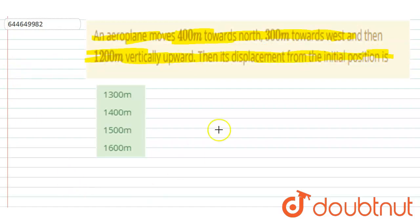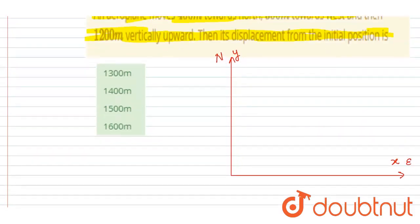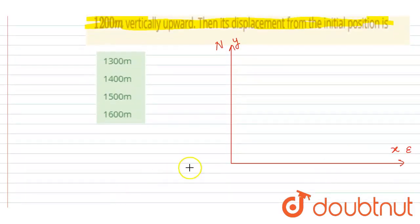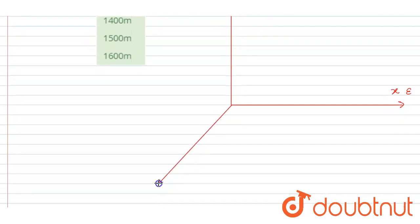So if I take this north direction as y-axis and east direction as x-axis, and vertically upward is z direction. This is the z-axis vertically upward.